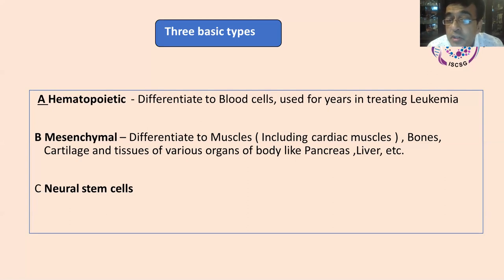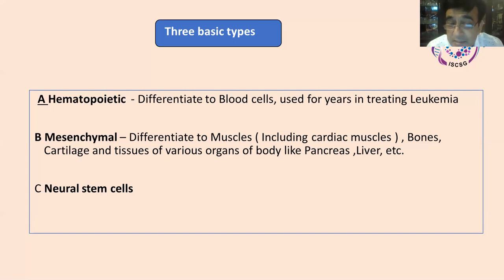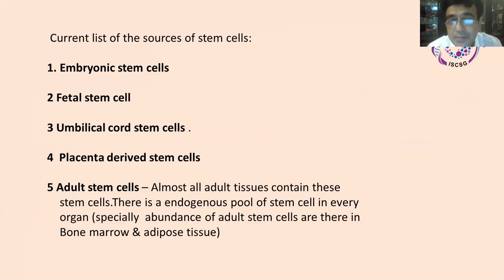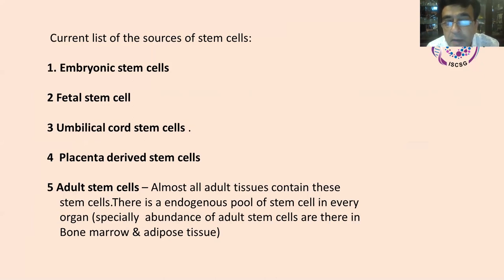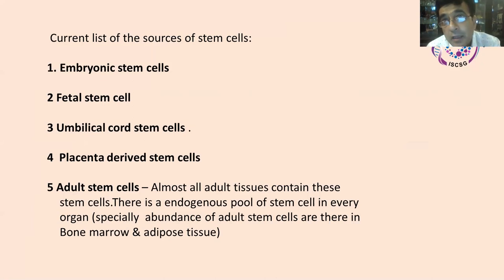There are three basic types of stem cells. Hematopoietic stem cells can differentiate into blood cells, and we have been using these in treating leukemia since the 1990s. Mesenchymal stem cells can differentiate into muscles — including cardiac muscles — bones, cartilage, and virtually every tissue of the body. The third type is neural stem cells. As for sources from which stem cells can be procured: we have embryonic stem cells from embryos, fetal stem cells from the fetus, umbilical cord stem cells from the umbilical cord — which is very popular in India and elsewhere — and when a gynecologist performs a delivery, parents may choose to preserve the umbilical cord or placenta.